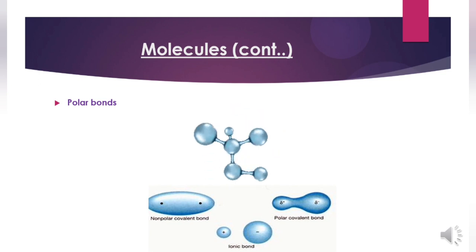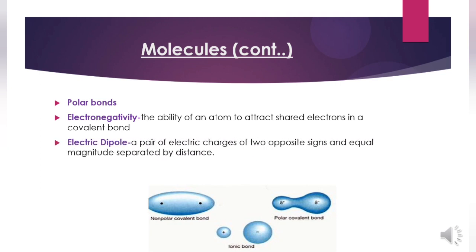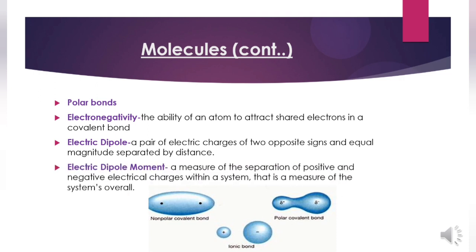The juxtaposition of equal and opposite partial charges constitutes an electric dipole. An electric dipole is a pair of electric charges of opposite signs and equal magnitude separated by a distance. If those charges are +q and −q separated by a distance, the magnitude of the electric dipole moment is defined. The electric dipole moment is a measure of the separation of positive and negative electric charges within a system.